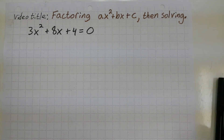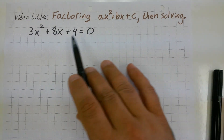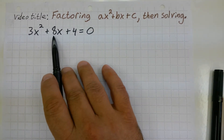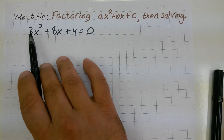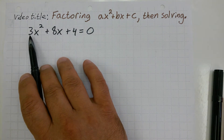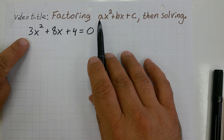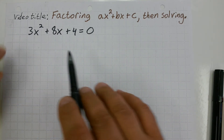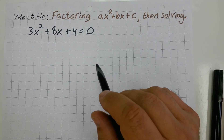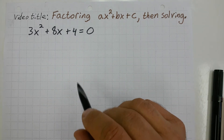What we want to do here is factor and then solve this equation 3x squared plus 8x plus 4. The first thing you want to realize is that it has a leading coefficient — that's the A term — and if it has a leading coefficient, it's kind of tricky to factor this into the components that multiply back together to equal the original equation.